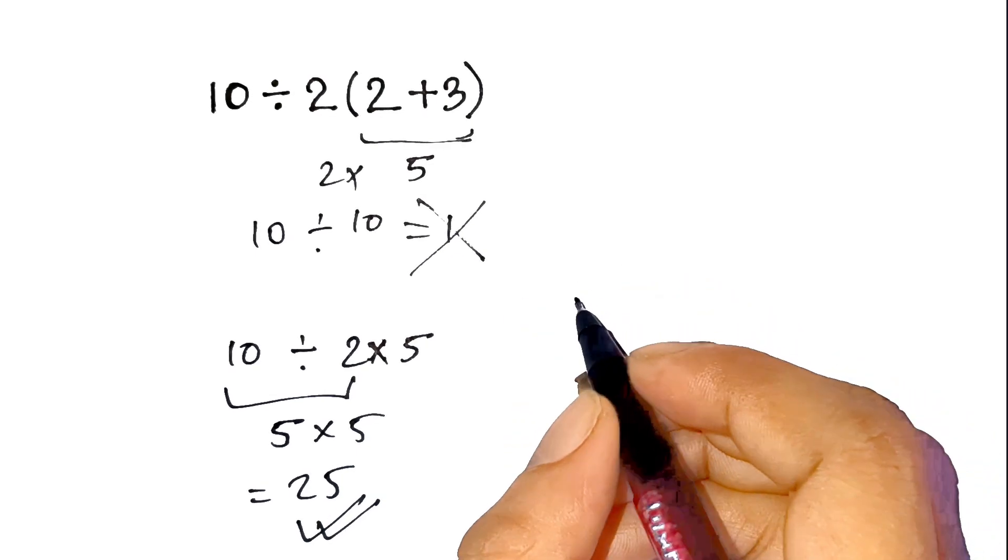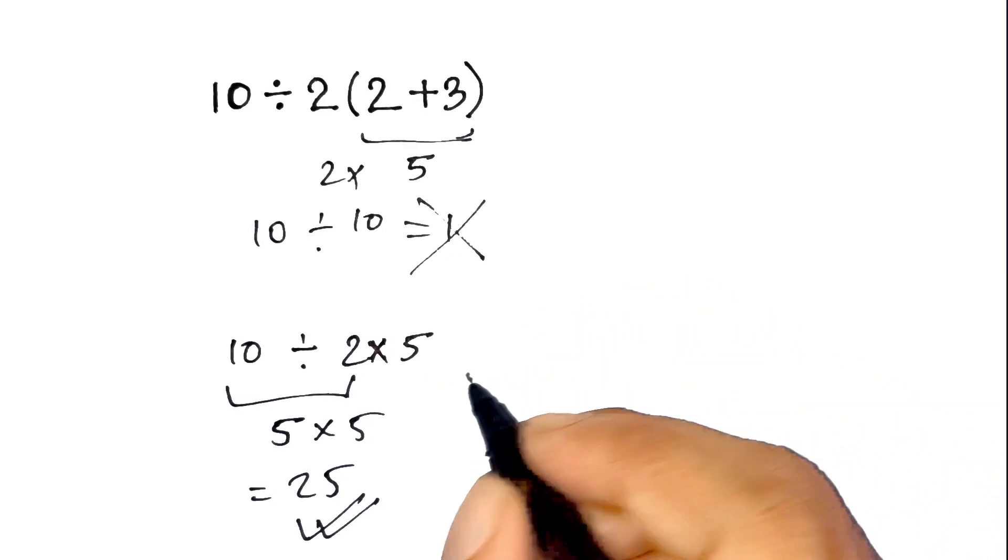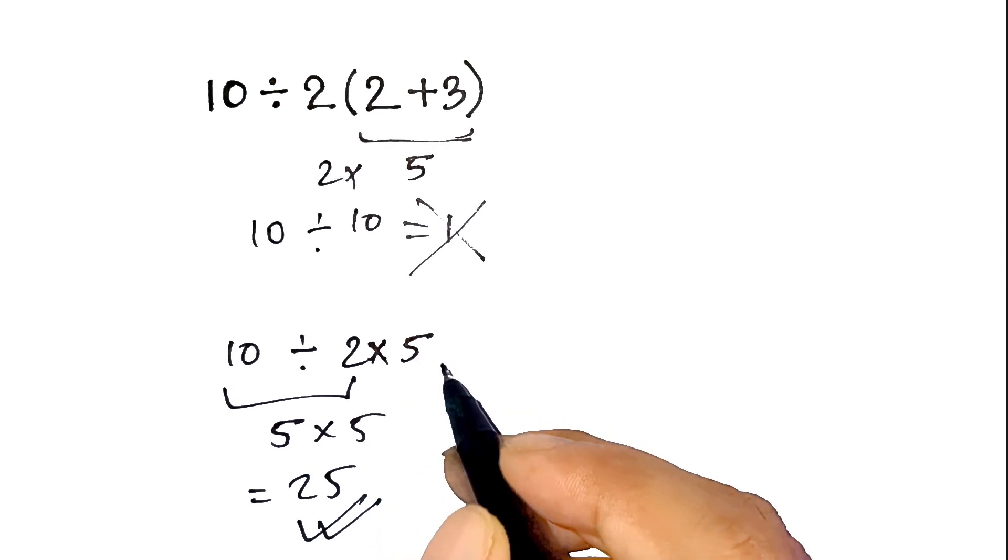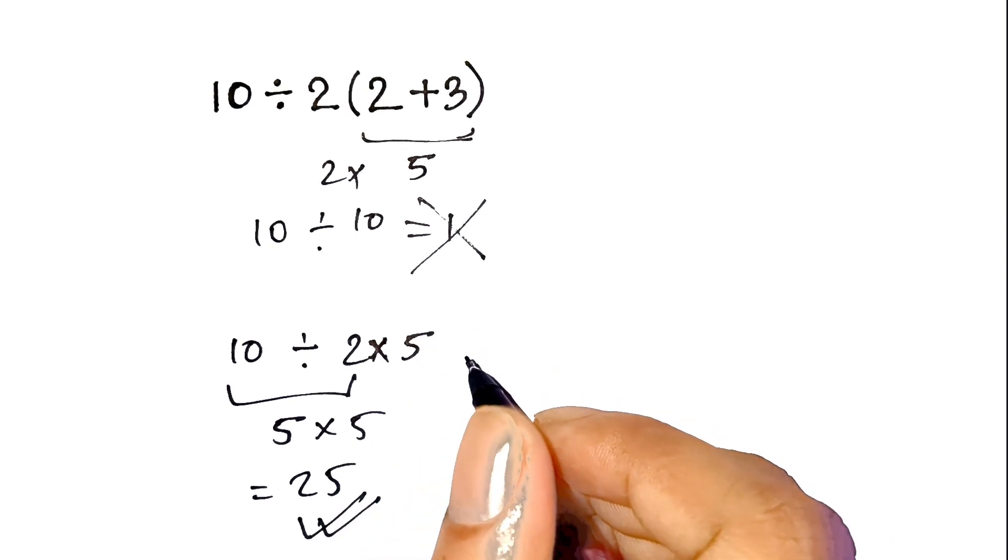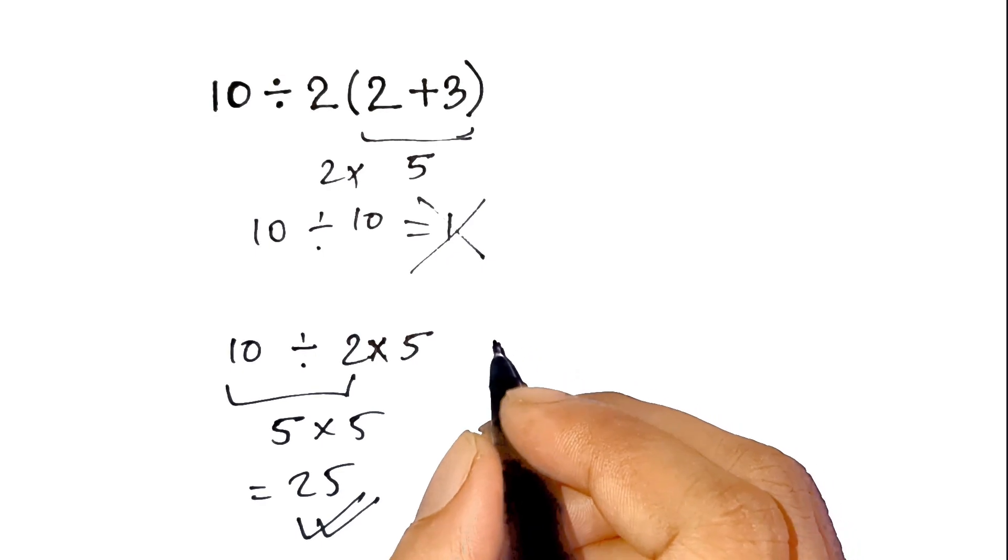But nope, order matters and it's always left to right for division and multiplication. If you're still not convinced, go ahead and check it on your calculator. You'll see it really gives 25.